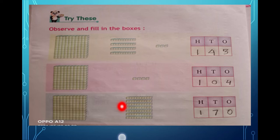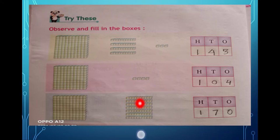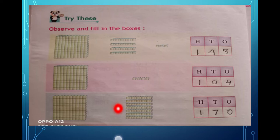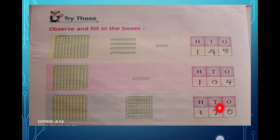Here there is one hundred. In the tens place the blocks are together but separated from each row — counting the rows: one, two, three, four, five, six, seven — seven rows means seven tens. And in ones place there is nothing, so zero. The answer is 170: zero ones, seven tens, and one hundred. There are three more questions on the same page that you will write yourself.